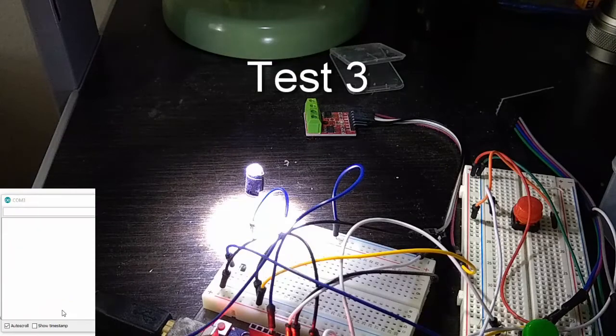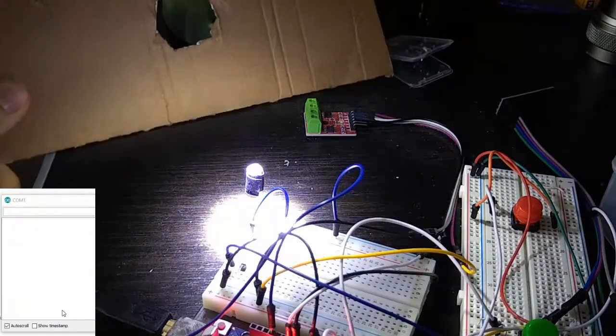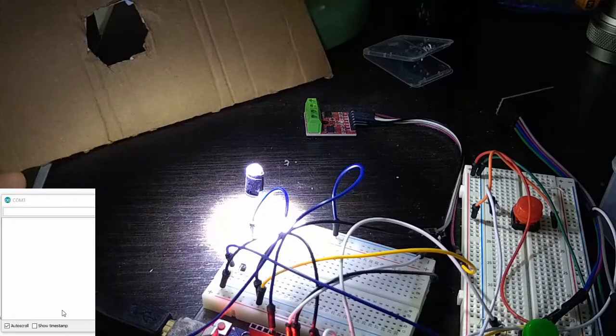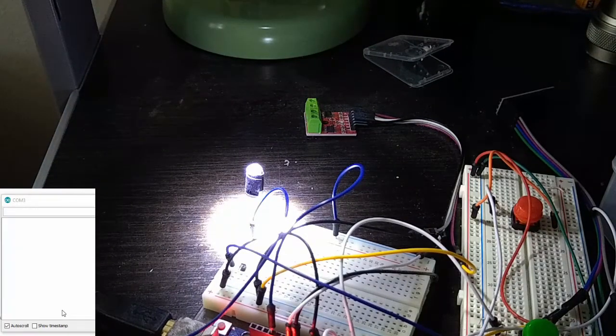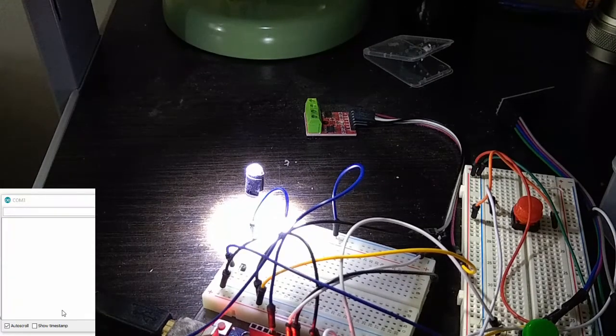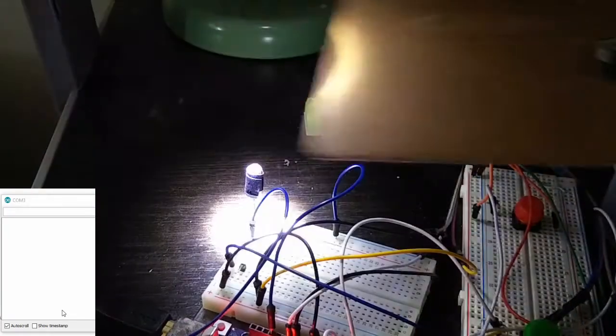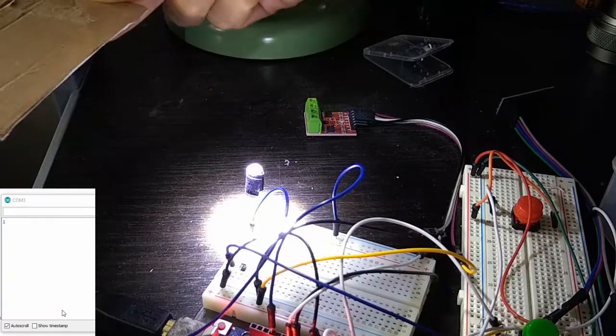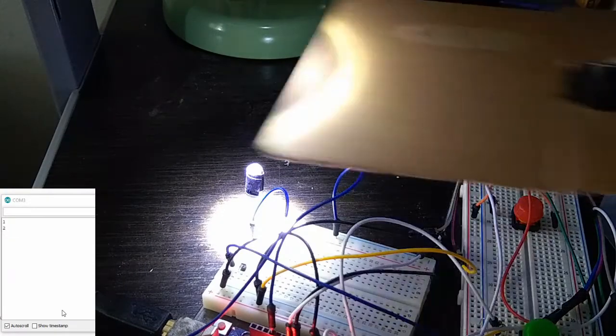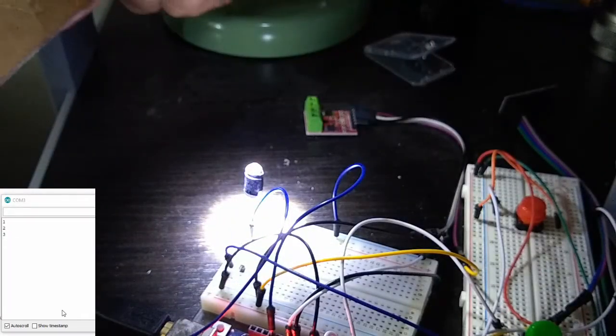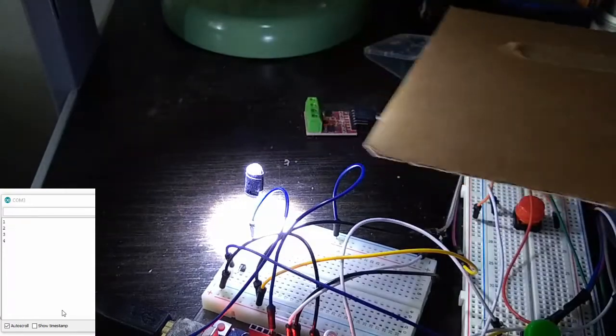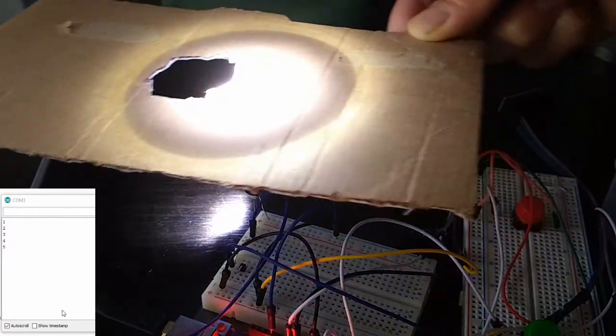Alright, this is revised test three. We are going to be shoving this little cardboard piece with a hole in front of the light and then we will see it trigger. So we're going to go at a fast speed first, right now. All right, let's go medium speed. All right, then slow speed.